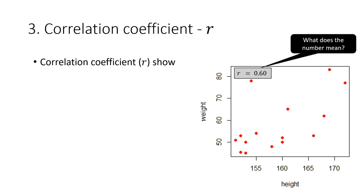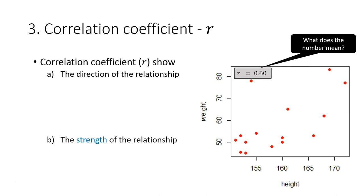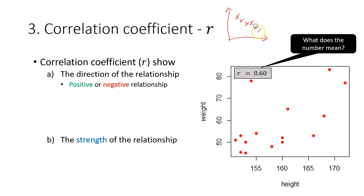The r value shows two pieces of information: first, the direction of the relationship, and second, the strength of the relationship. The direction can be positive or negative. If the direction is negative, there will be a negative sign from the result of the calculation. If there is a positive relationship, we leave it as is without a positive sign. If the data shows a downward pattern, r is likely negative; if the data shows a positive relationship, r will be positive.